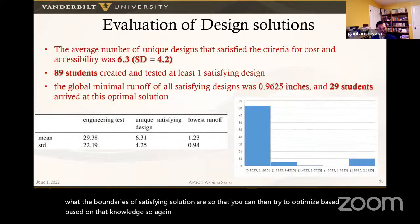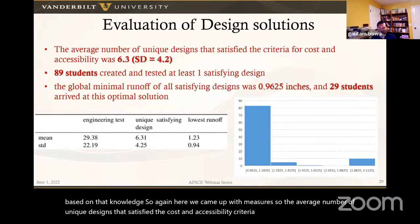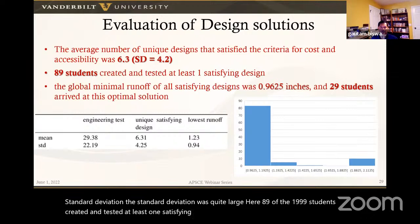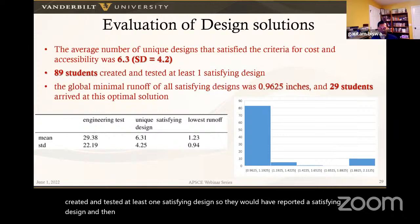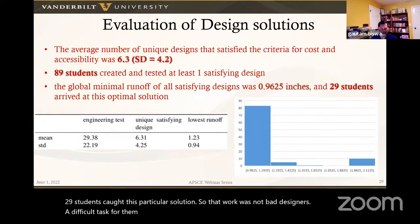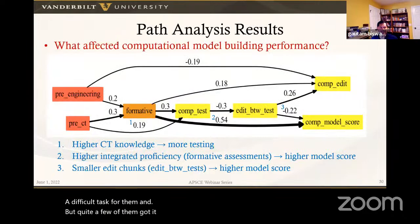The average number of unique satisfying designs per student was about 6.3. 89 of the 99 students created and tested at least one satisfying design. The global minimum achievable runoff was about 0.96, and 29 students found this optimal solution. Design is a difficult task for sixth graders, but quite a few of them managed it.